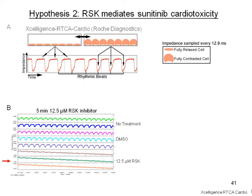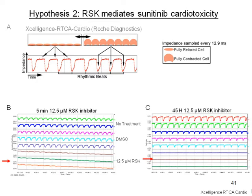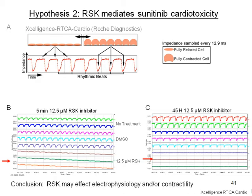Looking at a number of different wells on the Agilent system — the top two wells are no treatment and vehicle DMSO — I treated at a low concentration of 12.5 micromolar of RSK inhibitor. Within five minutes, I had a significant decrease in amplitude as well as a decrease in contractility. By 45 hours, I didn't see any rescue of contractility, but I knew based on the LDH and ATP assays that these cells were still alive. So I hypothesized that RSK may have an effect on electrophysiology and contractility.